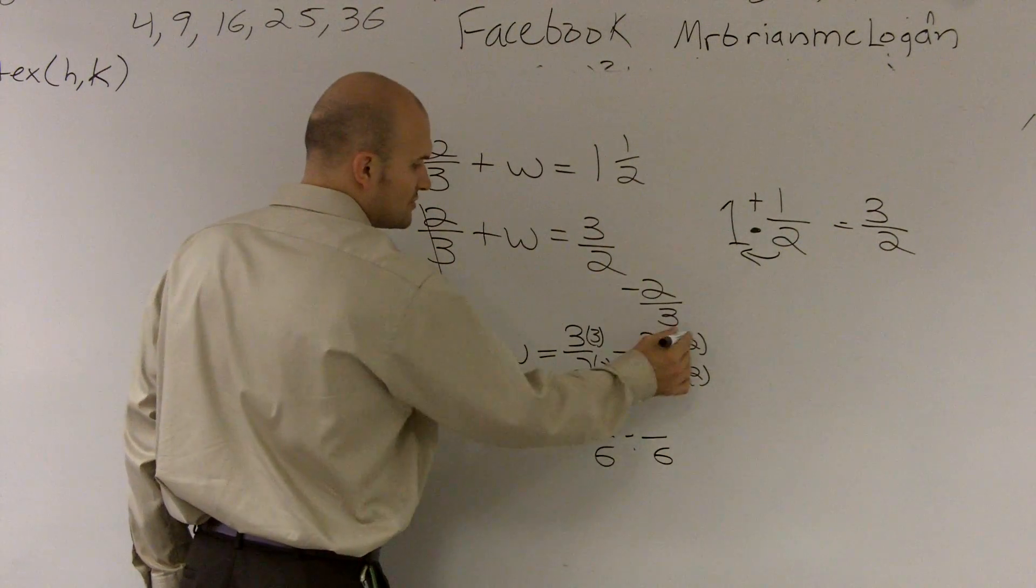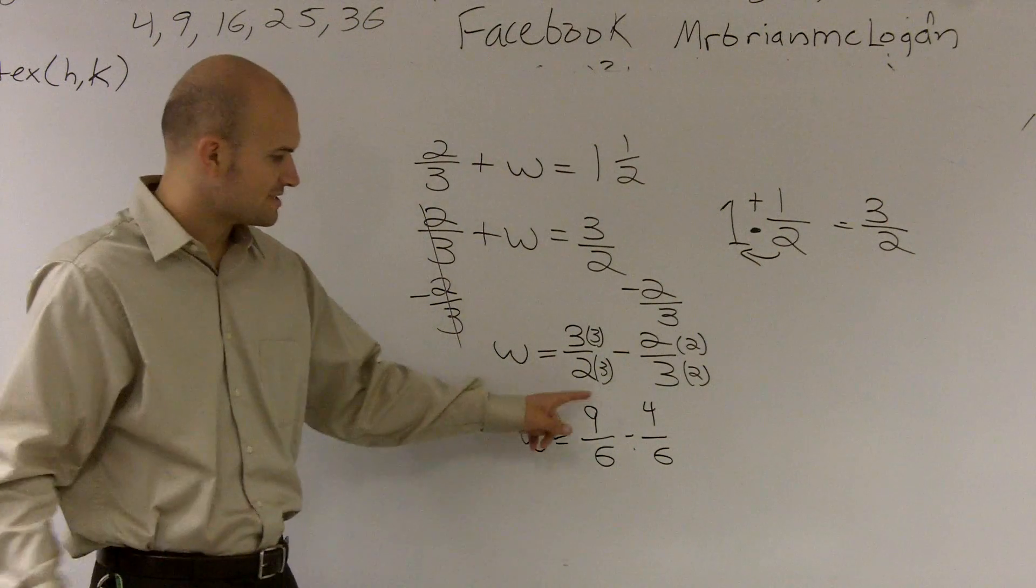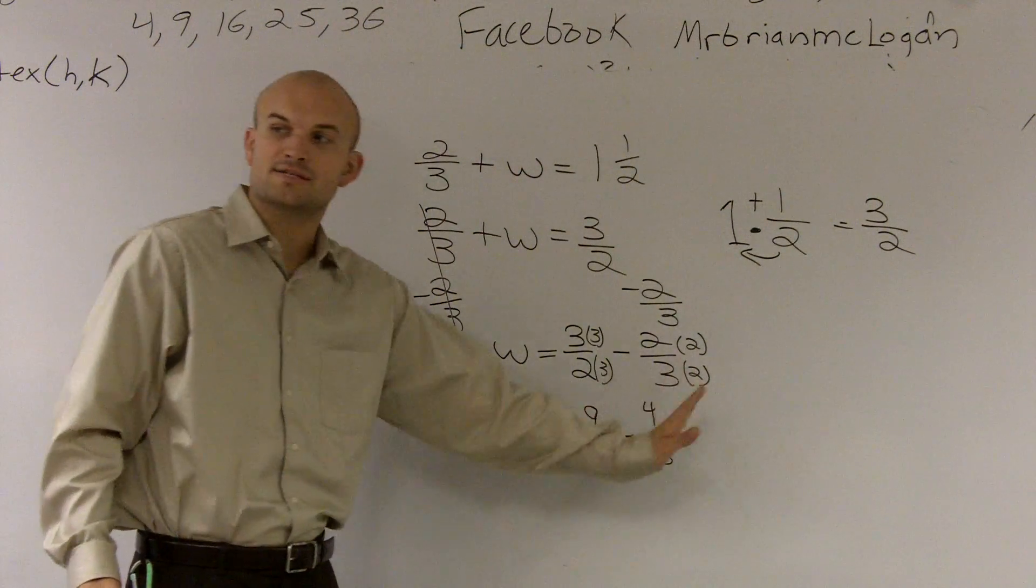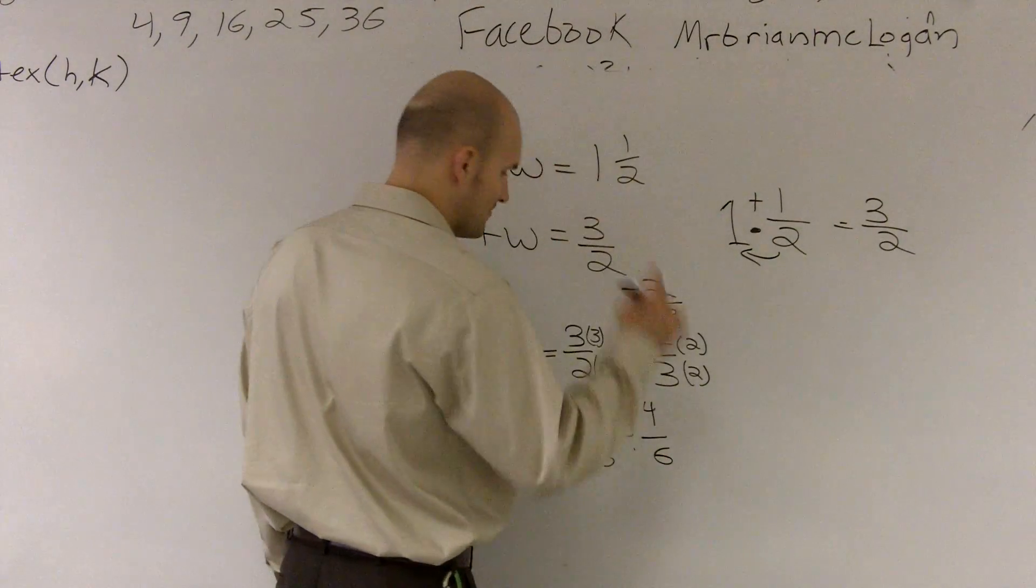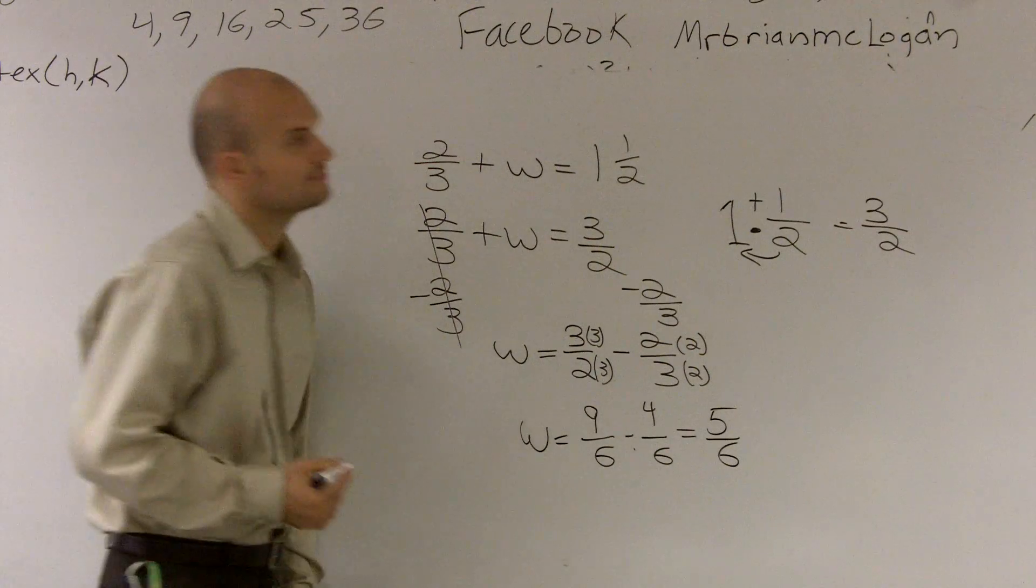3 times 3 is 9. 2 times 2 is 4. Therefore I have w equals 9 sixths minus 4 sixths. They have the common denominators, so now I can subtract the numerators. So therefore my final answer becomes 5 sixths. Alright? Let's go.